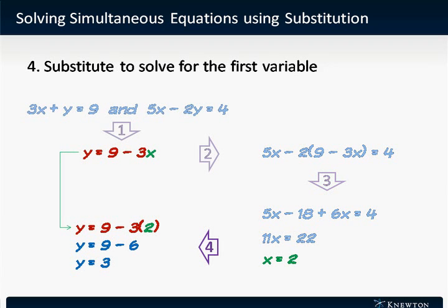The fourth step is to substitute into one of the original equations to solve for the other variable, in this case y. We'll use the equation y equals 9 minus 3x. We'll plug in x equals 2 to get y equals 9 minus 3 times 2, y equals 9 minus 6, y equals 3. So we have the final solution: x equals 2, y equals 3.